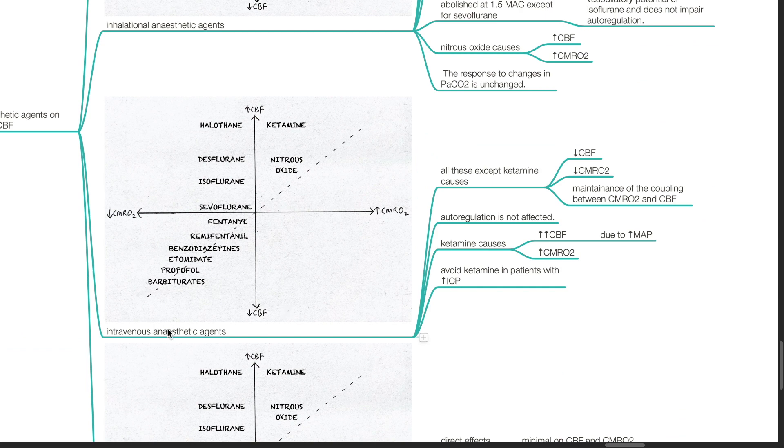Intravenous anesthetic agents. All these except ketamine cause decrease in CBF, decrease in CMRO2, and maintenance of the coupling between CMRO2 and CBF. Autoregulation is not affected.